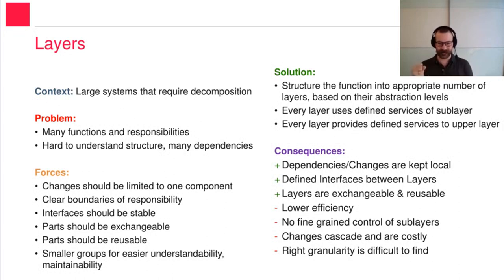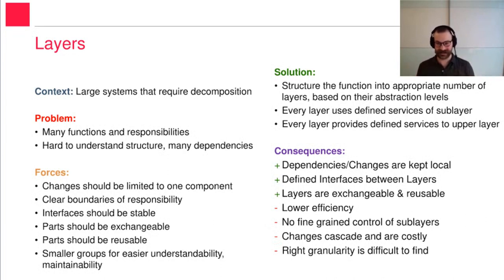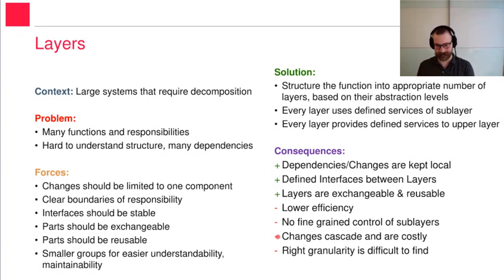Then, if there are changes which cascade outside of a layer — if we want to change the interface between layers — that's costly. If this happens often, layers may not be the best suitable pattern for this. The interface between layers should stay stable. And finding the right granularity, the right number of layers, is difficult.